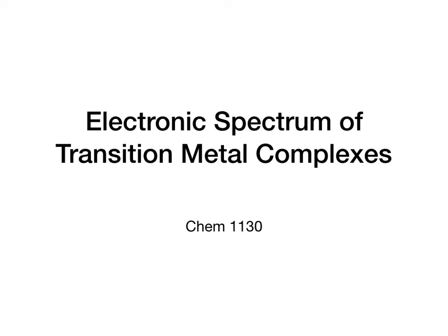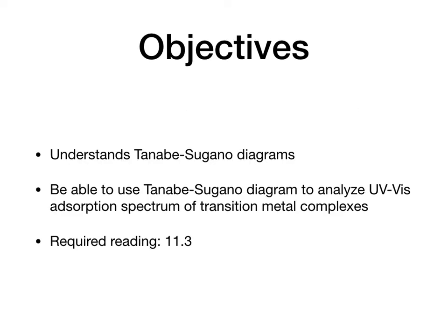Welcome. Today's lecture will focus on the electronic spectrum of transition metal complexes and how to assign the peaks in the spectrum using the so-called Tanabe-Sugano diagrams. Our goal is to understand what this diagram is. It's a really complicated correlation diagram, so we're going to spend most of our time explaining how to read this diagram and how it was derived.